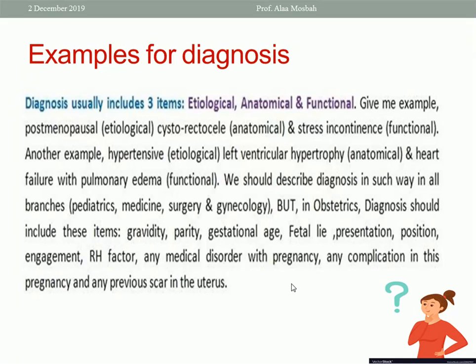For a full diagnosis in obstetrics, you state the following items: gravidity, parity, gestational age, fetal lie, presentation, position, engagement, any medical disorder, Rh factor (if negative, you should mention it), any medical diseases with the pregnancy, or previous scar due to caesarean section, ruptured uterus, or myomectomy, or previous surgical operation in gynecology which can affect the decision regarding delivery — like classical repair for genital prolapse. It is important to mention these in the diagnosis.